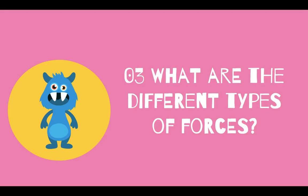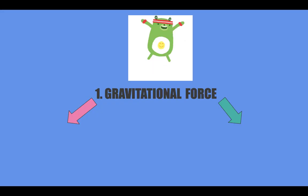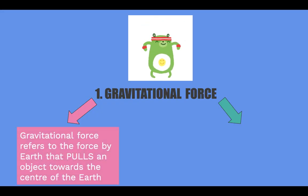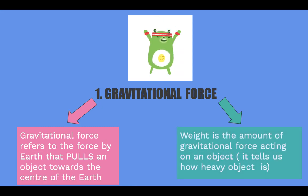Now, what are the different types of forces? Gravitational force refers to the force by Earth that pulls an object towards the centre of the Earth. Weight is the amount of gravitational force acting on an object. It tells us how heavy the object is.